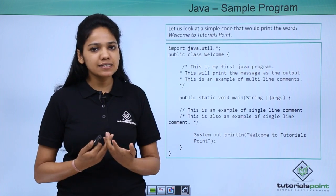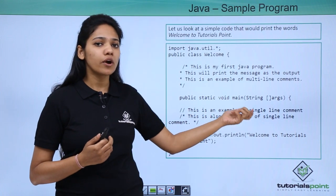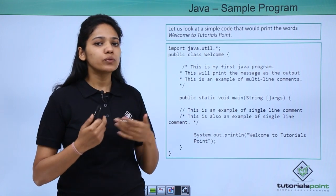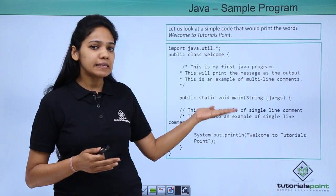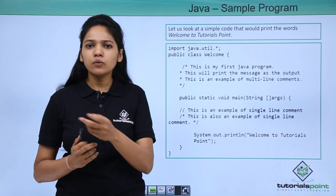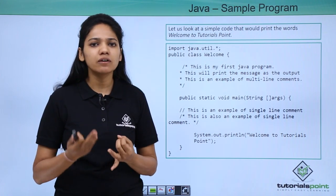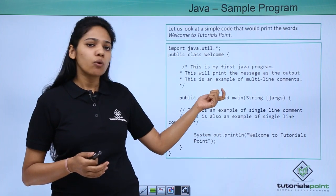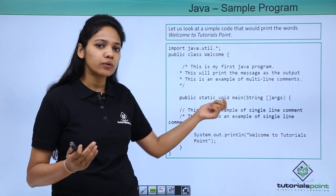We will see what static stands for in future videos. Then you have void and main. Void is a keyword which says that it does not have any return value — this method will not return any kind of value. A value may be anything: an integer, a string, anything. So void means this method will not return any value.